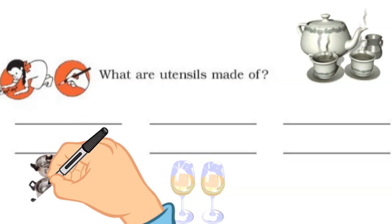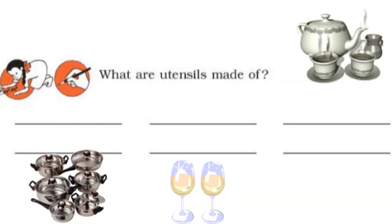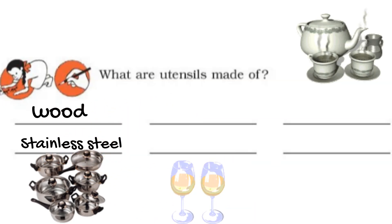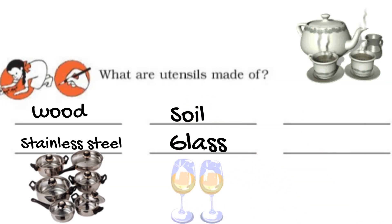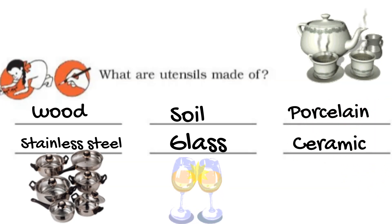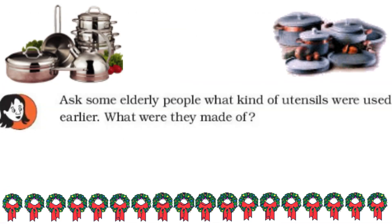What are utensils made of? Utensils used at home may be made of wood, stainless steel, earthen material like soil, or glass. So many materials are used to make utensils. You can also take the example of porcelain or ceramic — we use ceramic and porcelain in our cups and saucers.